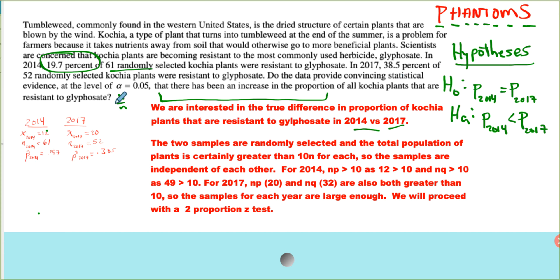On to the assumptions. The two samples are randomly selected. First, we have to assume that they're independent of each other. So the way that you check that is, first, are they randomly selected? And they are. And then the total population has to be greater than 10 times the sample size. That way, when you select it, the probabilities don't change. So the two samples are randomly selected, and the total population of plants is certainly greater than 10 times N for each. So the samples are independent of each other. That is one condition that we must satisfy.